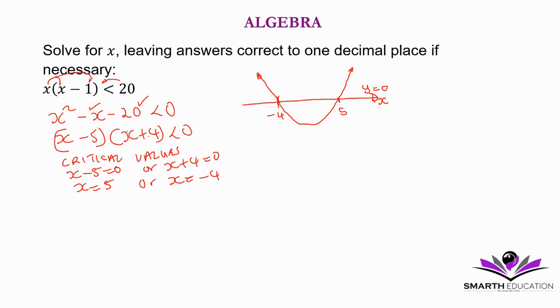Now, we're saying where is this function less than 0, below the x axis. So it's here. It means between negative 4 and 5. That's where the graph is below the x axis. Less than 0 means below the x axis. Our solution is x is greater than negative 4 but less than 5. So that's the solution there.